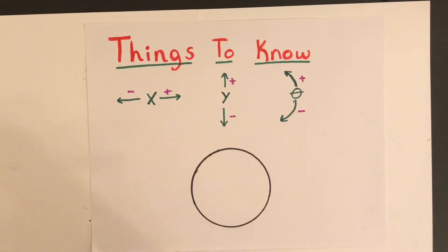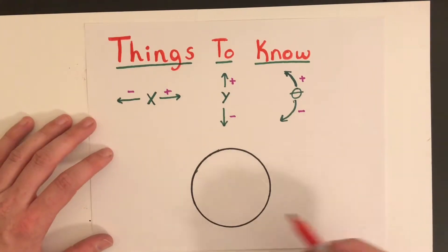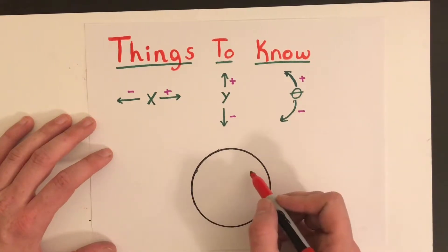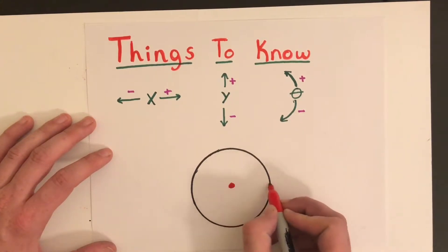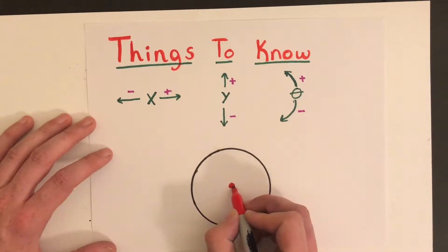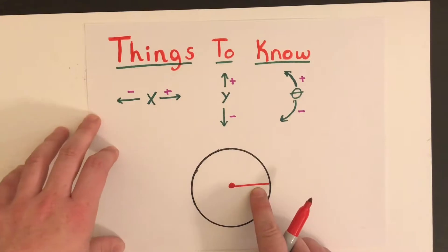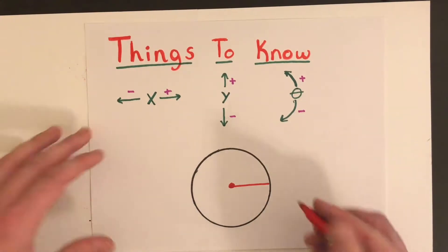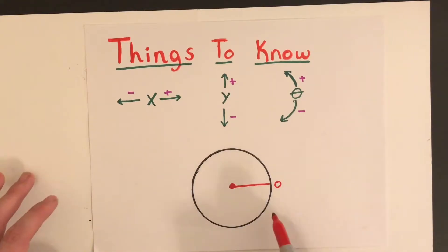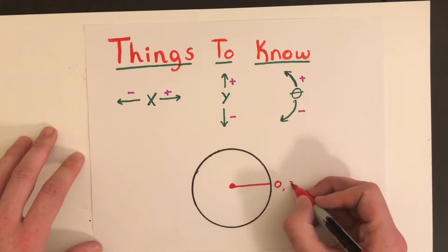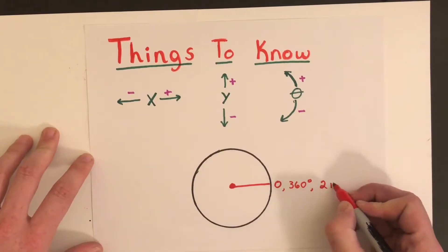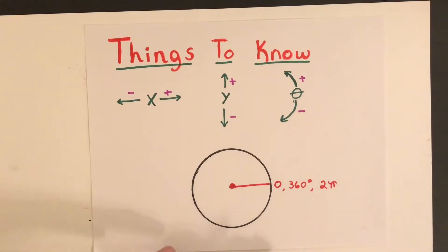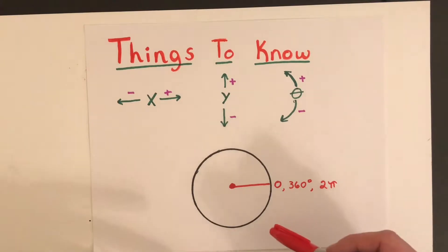Another important concept is what we call the reference line. The reference line is where our starting point is on the circle. This reference point is always based off the center of the circle and is always horizontal and to the right of the center. This line represents our zero location — where everything starts. A complete rotation is 360 degrees or 2 pi radians.